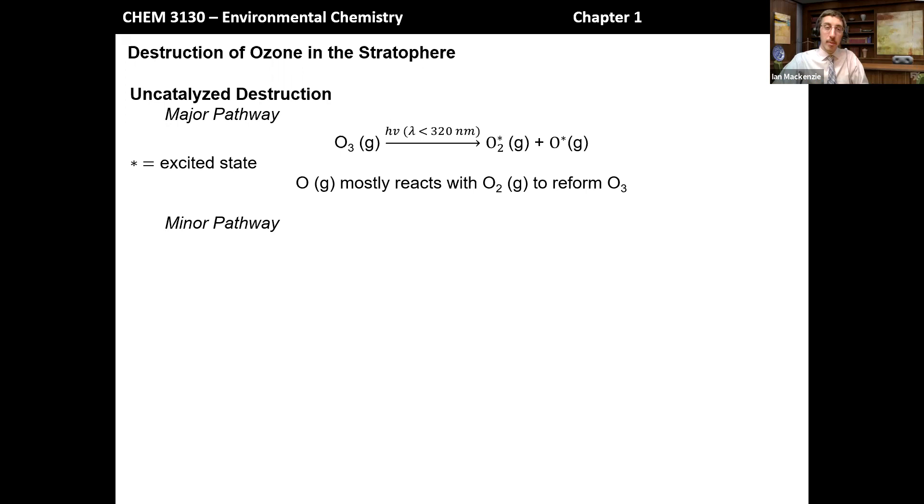Now, the second pathway, which is a minor pathway, is say that we have a single oxygen atom, perhaps from the major pathway as a product, and rather than bumping into an O2 molecule to reform ozone, it happened to bump into an ozone molecule. Maybe this is in the mid-ozone layer, so every once in a while that single oxygen atom is going to bump into ozone.